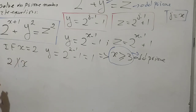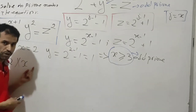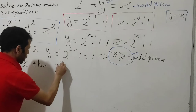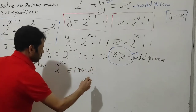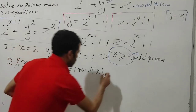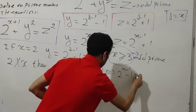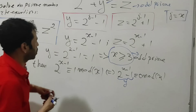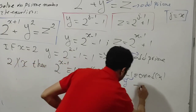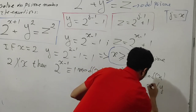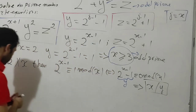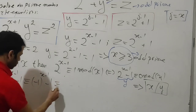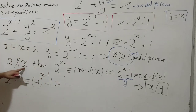Since x is an odd prime and 2 does not divide x, we can apply Fermat's Little Theorem: 2^(x-1) ≡ 1 (mod x). Taking 1 to the left gives 2^(x-1) - 1 ≡ 0 (mod x). Since y = 2^(x-1) - 1, this tells us x divides y.